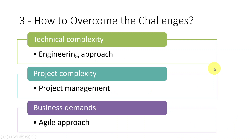Now let's look at how to overcome those challenges and develop software successfully. The software industry has come up with different techniques and procedures to counter those challenges. To overcome technical complexities, we use the engineering approach — that is why we call it software engineering. To handle challenges of the project nature, we use project management, which is why we have project managers on software development teams. And to face business demands, we use the agile approach. These three — the engineering approach, project management, and agile practices — are used in combination.